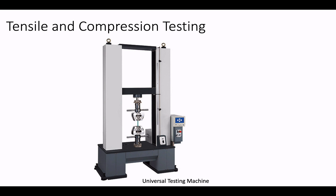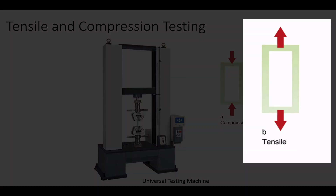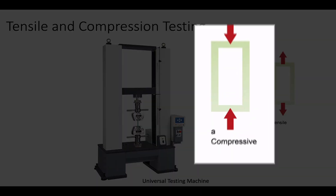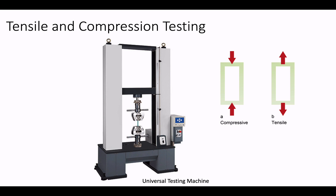These tests are typically performed using a universal mechanical testing instrument. A tensile test is a method for determining behavior of material under axial tensile loading, while a compression test is a method for determining the behavior of material under compressive loading. Most of the time we can use a universal testing machine to perform both compressive and tensile tests.